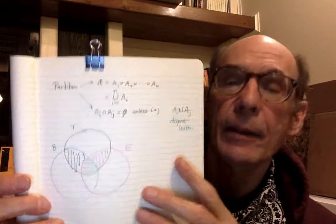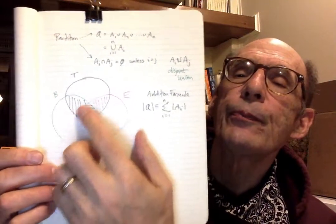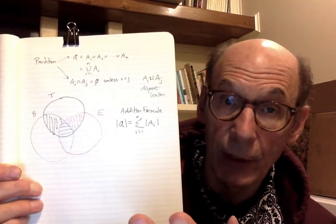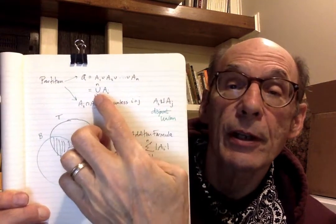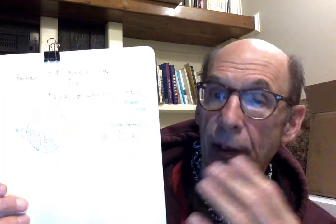Let me write down the basic formula — this is called the addition formula. If you have a partition it's easy to count how many things are in the grand union: you take the number in each set, and because there are no overlaps nothing is counted twice. So the addition formula says the size of A equals the sum i equals 1 to N of the sizes of the individual sets A sub i. Because it's a partitioned set there are no overlaps and nothing gets counted twice.